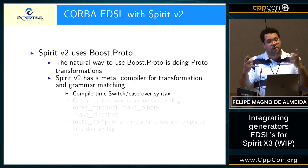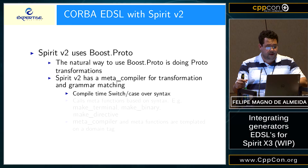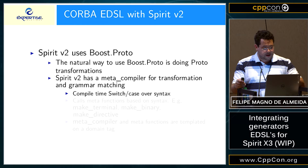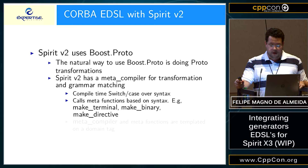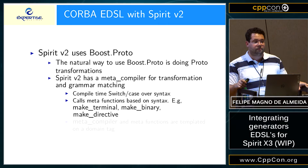If it has square brackets it becomes a directive. If it's a terminal or has a binary operator, it goes to operators, and so on. That's how it calls meta-functions inside Spirit V2. They are called make_terminal, make_binary, make_unary, and make_directive. These meta-functions are what you can specialize to extend Spirit V2 for other domains.